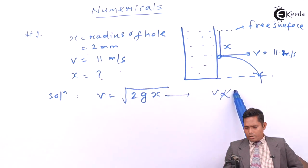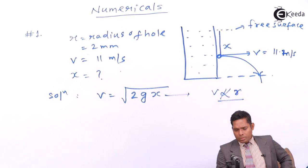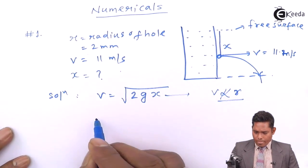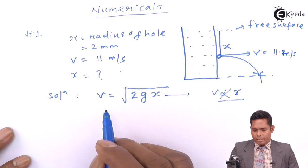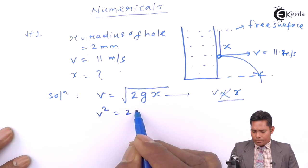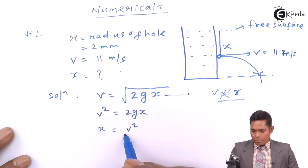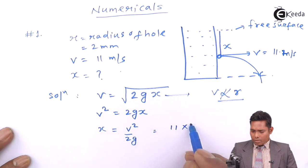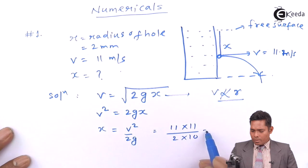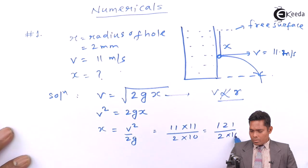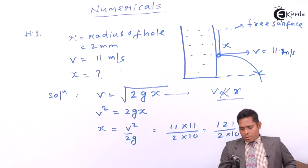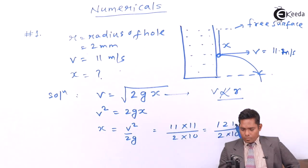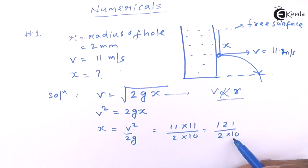As you can see here, V is independent of the radius of the hole. So if I square both sides, then I get V squared equals 2gx. From here I can get x as V squared upon 2g. I'll put the values of V here: 11 squared divided by 2 into 10. This is 121 divided by 20, which is 6.05.